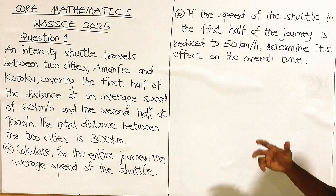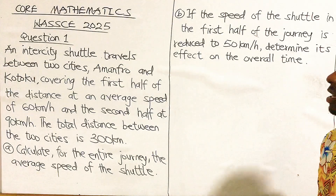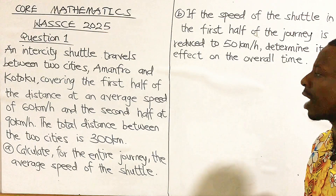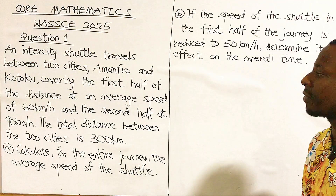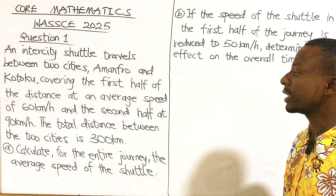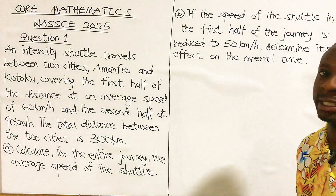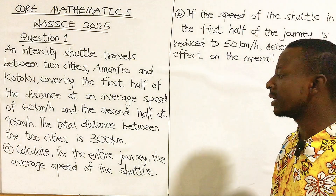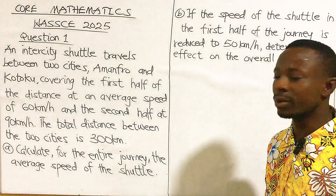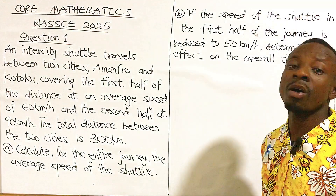My amazing viewers, this is WSI 2025, question one. An intercity shuttle travels between two cities, Amanfro and Kotoku, covering the first half of the distance at an average speed of 60 km per hour, and the second half at 90 km per hour. The total distance between the two cities is 300 km.